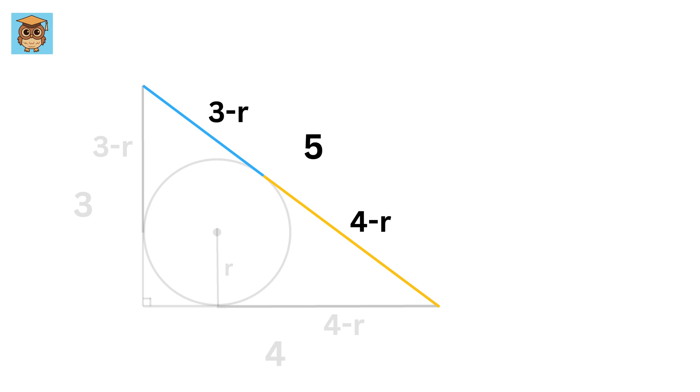Now let's focus on the hypotenuse. The length of the hypotenuse is 5. Now this is also equal to 3-r plus 4-r. So we have 7-2r equals 5. This gives 2r equals 2 and r equals 1.